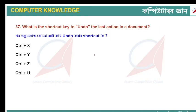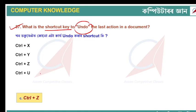What is the shortcut key to undo the last action in a document? The answer is Ctrl+Z. Instead of clicking undo, you can use the keyboard shortcut Ctrl+Z to undo the last action.